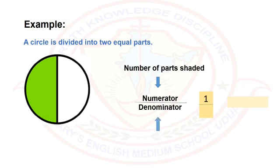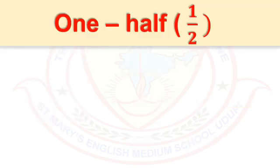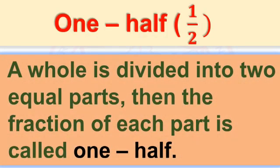Denominator means total number of equal parts of the whole. Here the whole is divided into two equal parts, so the denominator is two. Therefore the fraction is written as one by two, and it is also called one half. A whole divided into two equal parts means the fraction of each part is called one half.